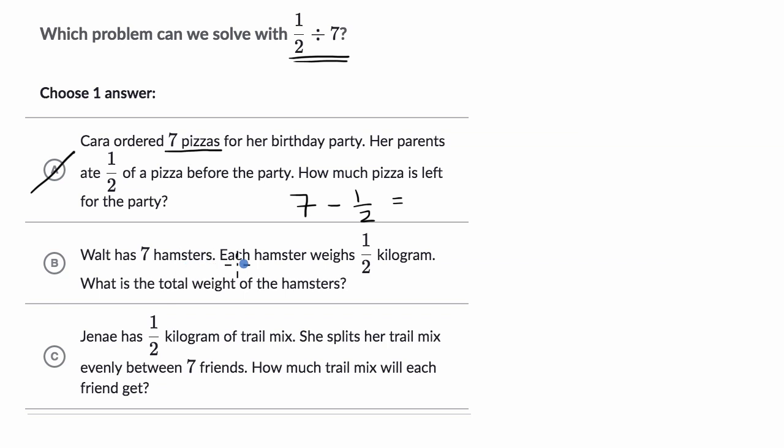Walt has seven hamsters. Each hamster weighs one half of a kilogram. What is the total weight of the hamsters? Well, to figure out the total weight, you would start with the number of hamsters, and you would multiply that times the weight of each hamster. So that would be seven times one half. So we could rule that one out.